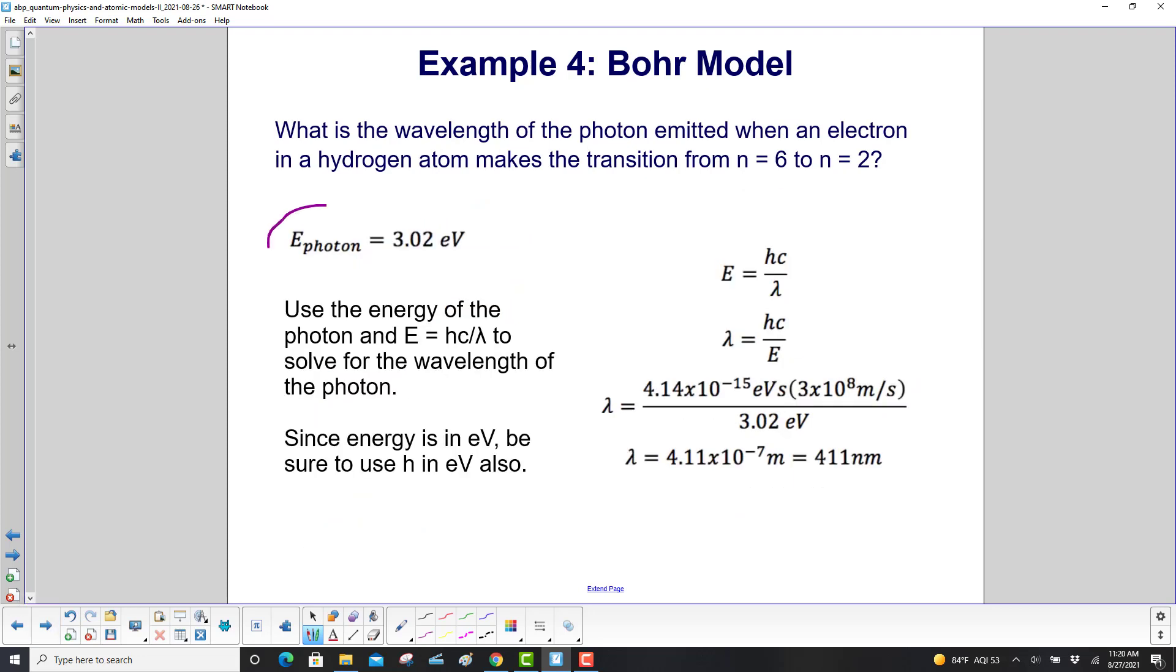So the previous slide gives us the energy of the photon, so we'll use that energy, and E equals hc over λ to solve for the wavelength of the photon. Since the energy is in electron volts, be sure to use Planck's constant in electron volts also. So we solve this for λ. We get hc over energy, and here's Planck's constant, the version with electron volts. So this will cancel out. Seconds will cancel out. We'll be left with meters. So λ is 4.11 times 10⁻⁷ meters, or 411 nanometers. We can move the decimal place over 2 to the right, which turns that into 10⁻⁹ meters. So that would be 411 times 10⁻⁹ meters. And what's 10⁻⁹ meter? That's a nanometer.